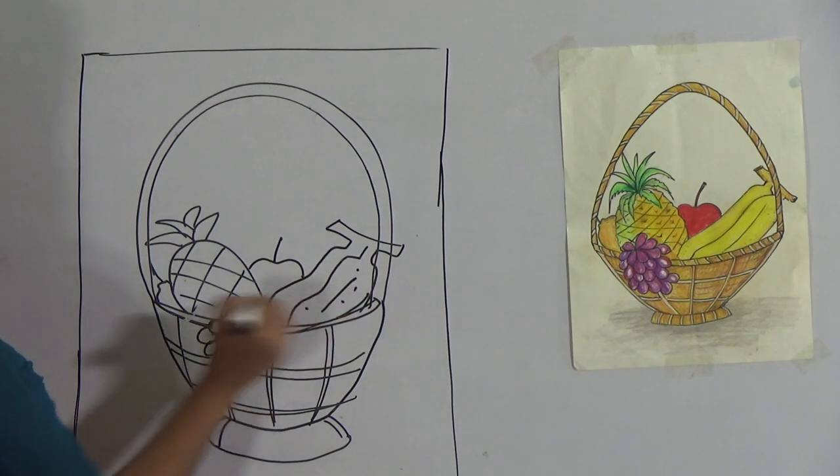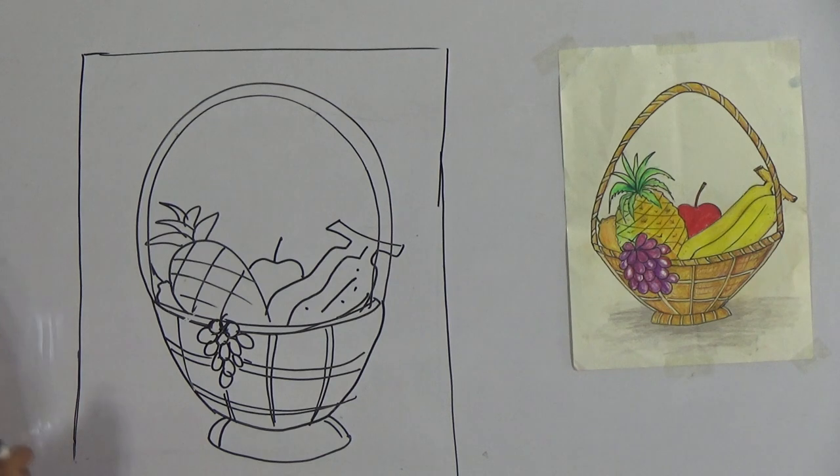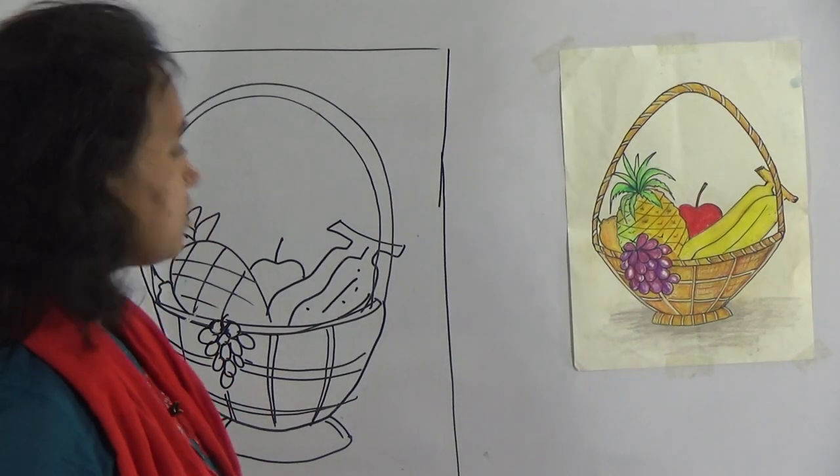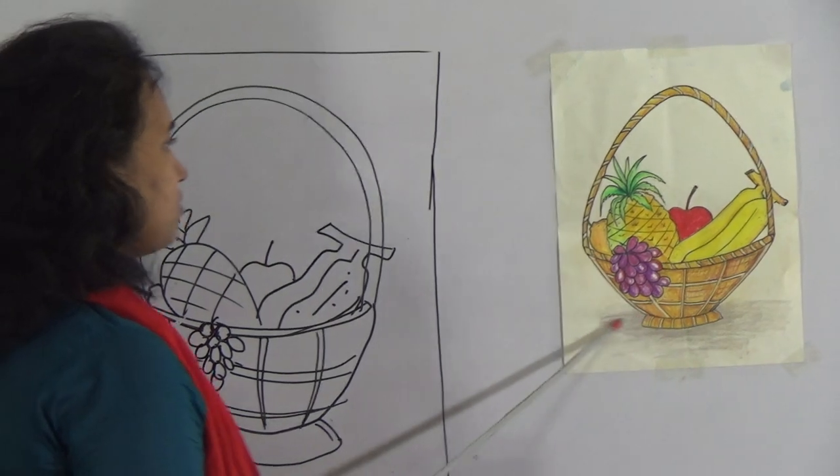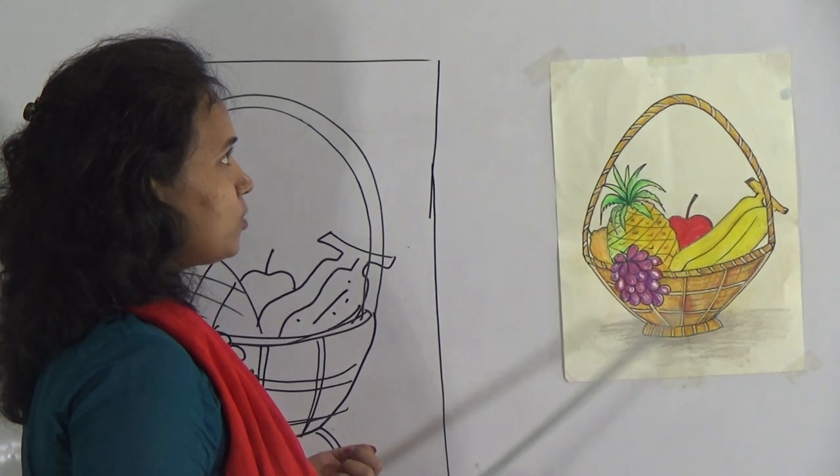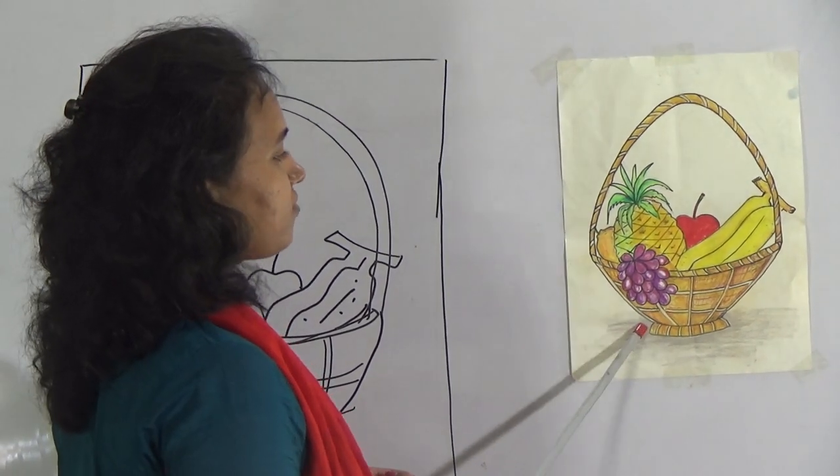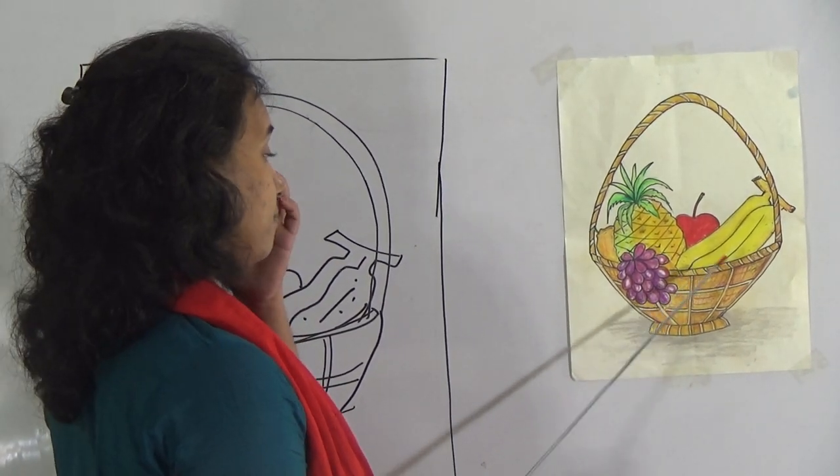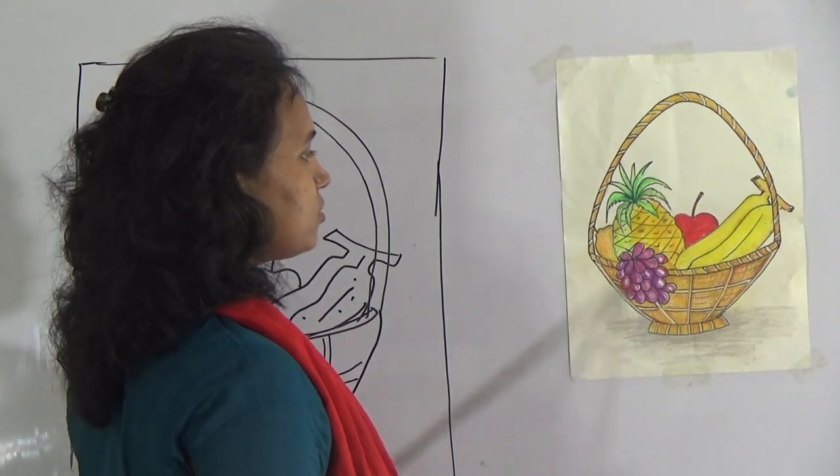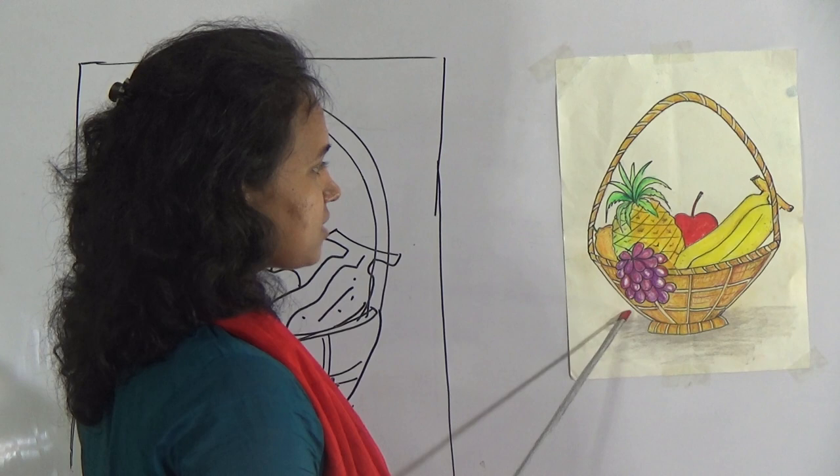After completing this drawing you will color this very carefully. Look at the board, I have already colored this picture for you. Now I will brief how I have colored the fruit basket. First I have colored the basket with yellow color and brown color.